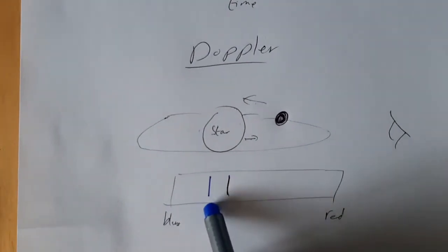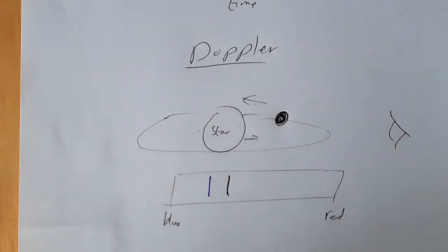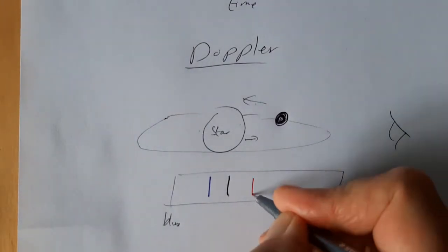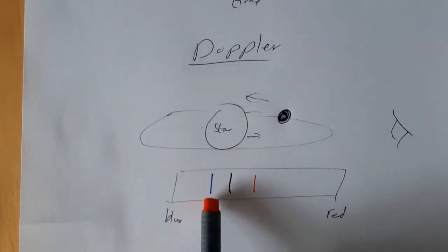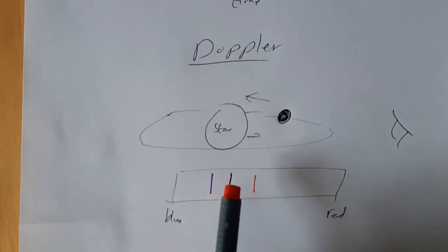So that's when the star's moving towards us. And then when it's moving away from us, it goes back into the red. And the time it takes to go from its peak blue shift through no shift, red shift, no shift and back to its peak blue shift is one period of the orbit. So that's giving us some information about those orbits.